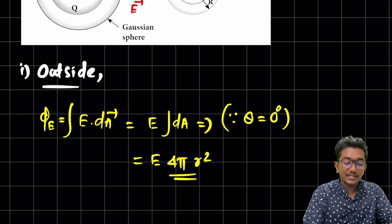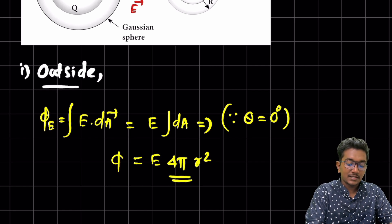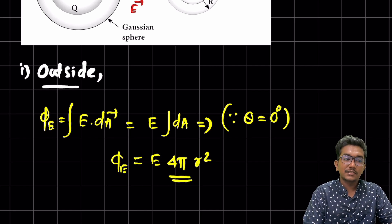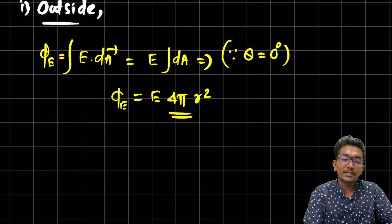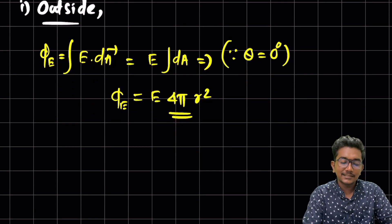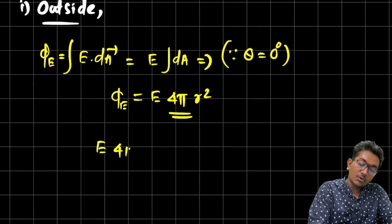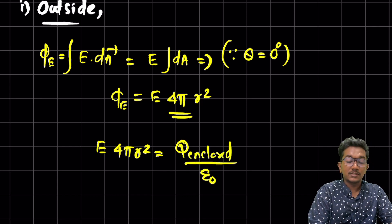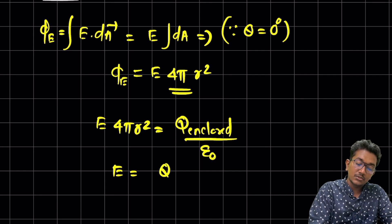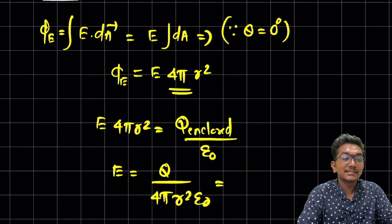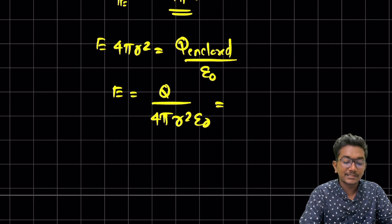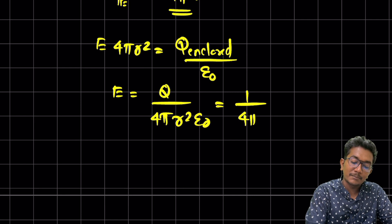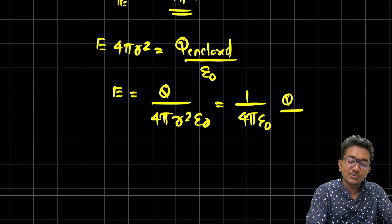The integral of dA over a sphere is 4πr², so the flux equals E times 4π times small r squared. Equating with Gauss's law, E times 4πr² equals Q enclosed divided by ε₀, giving us E = Q divided by 4πr²ε₀, which is the same as (1/4πε₀)(Q/r²).